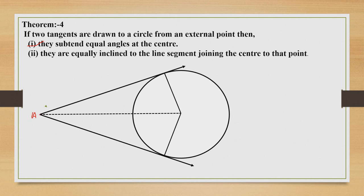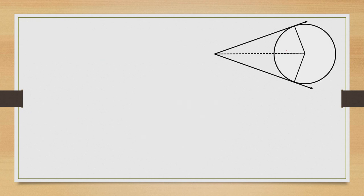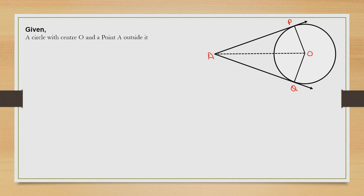Let us suppose a circle with center O. A tangent AP and another tangent AQ are drawn from an external point A to the circle. So AP and AQ are tangents to the circle from external point A.